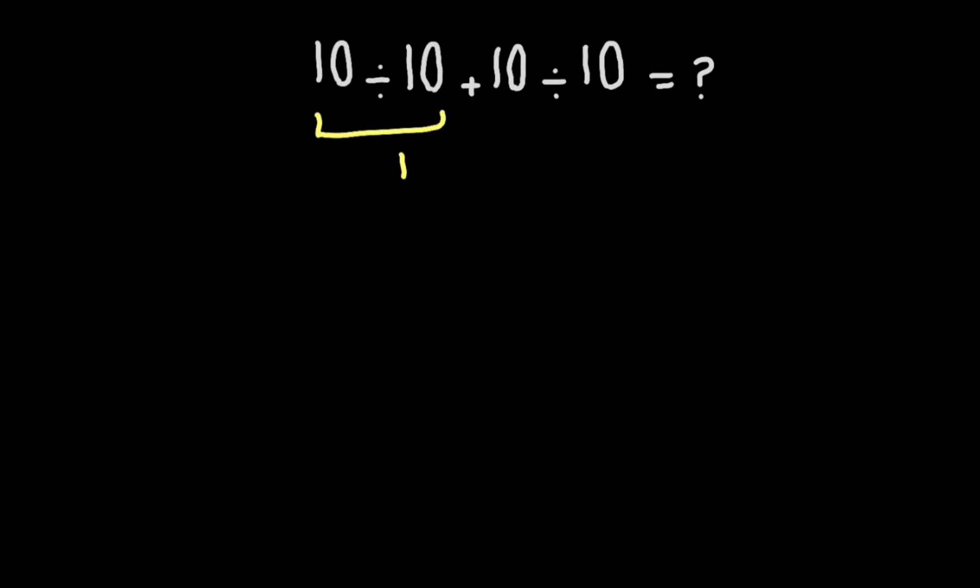Now 10 divided by 10 gives us 1, 1 plus 10 gives us 11, and 11 divided by 10 gives us 11 over 10.